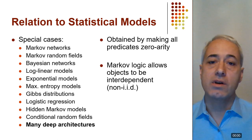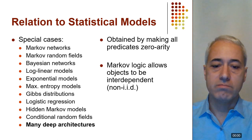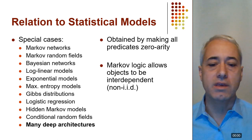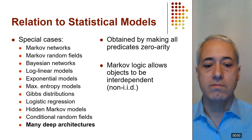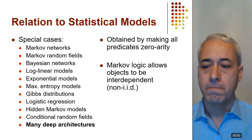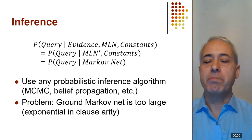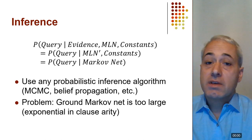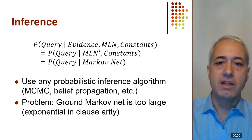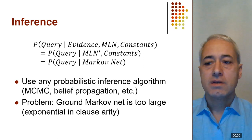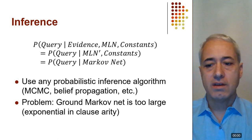This naturally allows us to model social networks, the web, metabolic networks, and much more. The representation is powerful and yet simple, but it's not much use unless we can efficiently do inference with it. In probabilistic models, inference means computing the probability of a query given evidence — for example, what is the probability that Anna has cancer given that Bob smokes and they're friends.